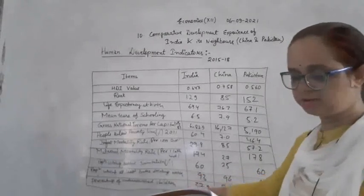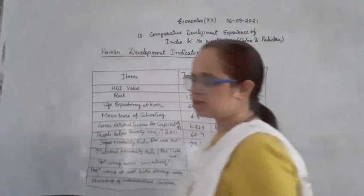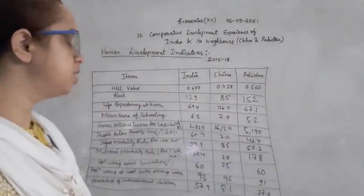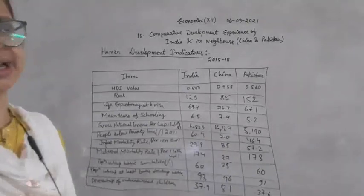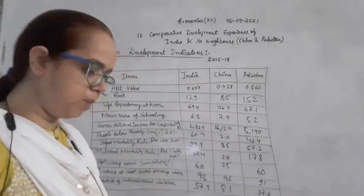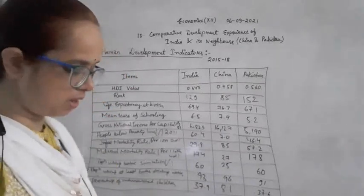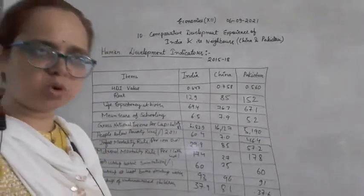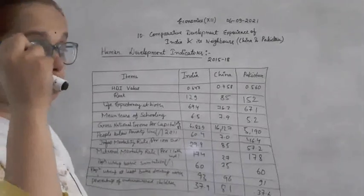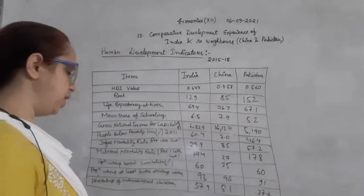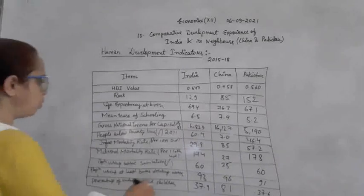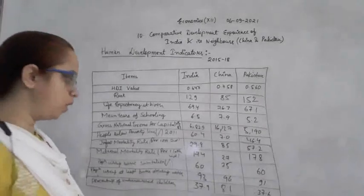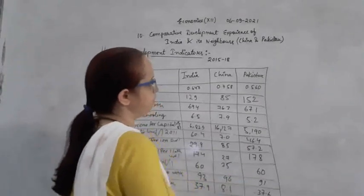Population using at least basic drinking water refers to the percentage of population that has reasonable access to water from tap water, hand pump, or well, able to obtain at least 20 litres per person per day. About 93% of population in India has access to a water source, around 96% in China, and 91% in Pakistan.